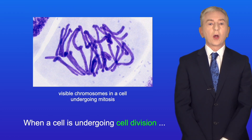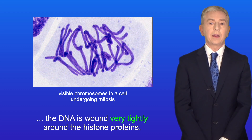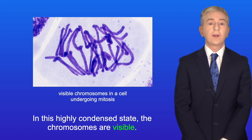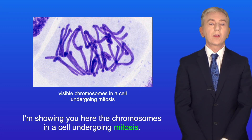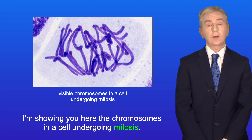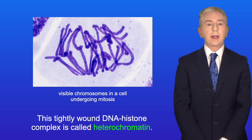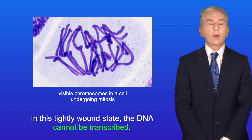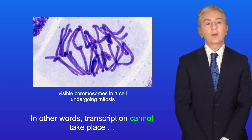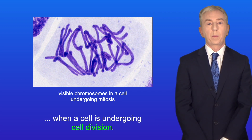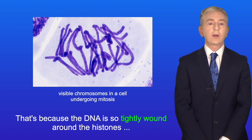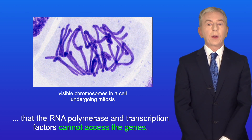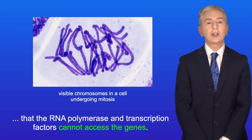When a cell is undergoing cell division, the DNA is wound very tightly around the histone proteins. In this highly condensed state the chromosomes are visible — I'm showing you here the chromosomes in a cell undergoing mitosis. This tightly wound DNA-histone complex is called heterochromatin. In this tightly wound state the DNA cannot be transcribed, because the DNA is so tightly wound around the histones that RNA polymerase and transcription factors cannot access the genes.